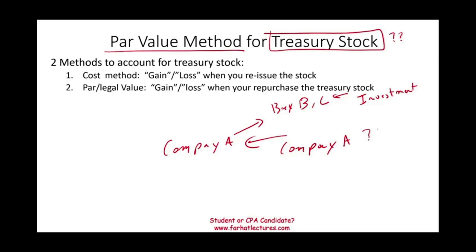Why do companies buy back their stock? There could be many reasons: they want to show confidence in their own stock, they want to reward stockholders by buying back shares so the stock price goes up, or they want to avoid a takeover. In this session, we need to understand how to account for treasury stock using the par value method, also called the legal method or stated method.